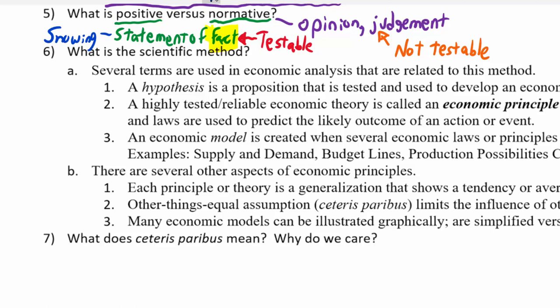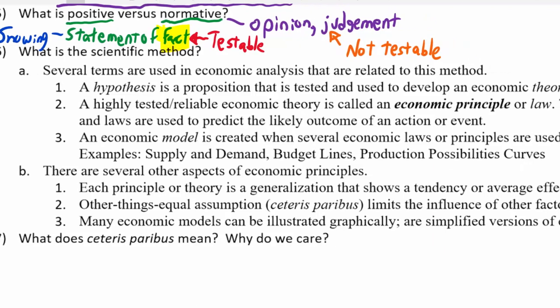A normative statement would be 'the unemployment rate is too high.' That's your opinion — maybe it's too high, too low, or just right. There's no way to check. 'It's too hot in this room' — maybe it's just right for me and too hot for you. 'Unemployment is bad' — that's a judgment we can't empirically test. Things that say something is too high, too low, good or bad, or that we should do something — like 'we should lower unemployment' or 'we should pay more to people who are unemployed' — are all normative statements, opinions without a way to test them.